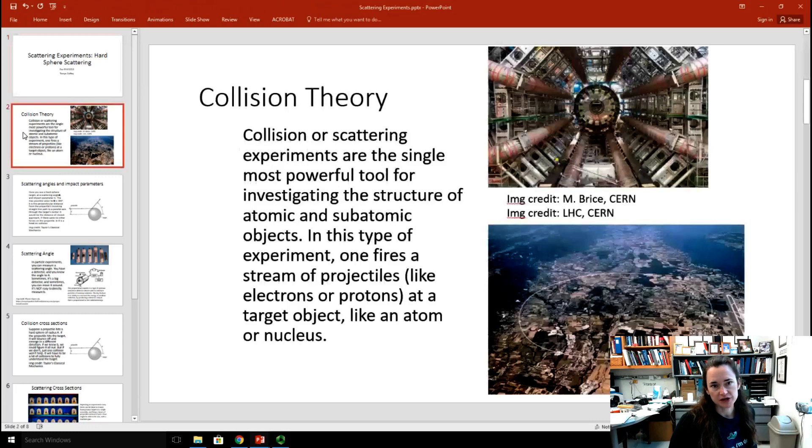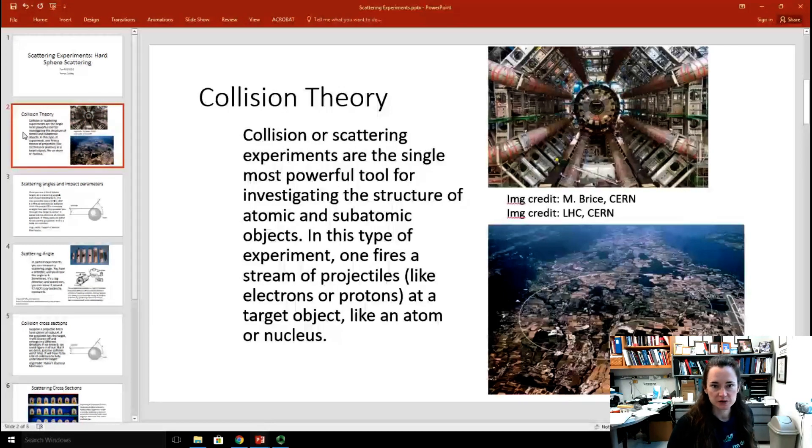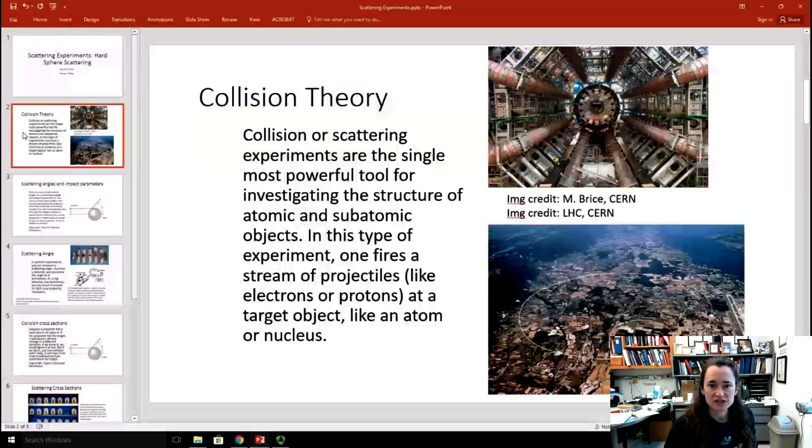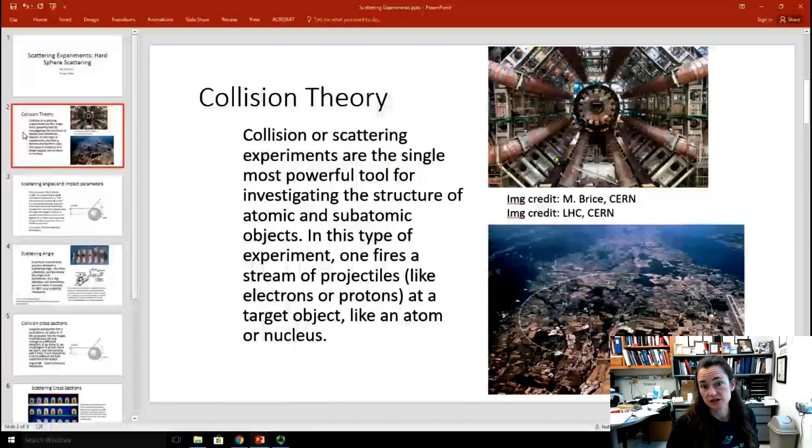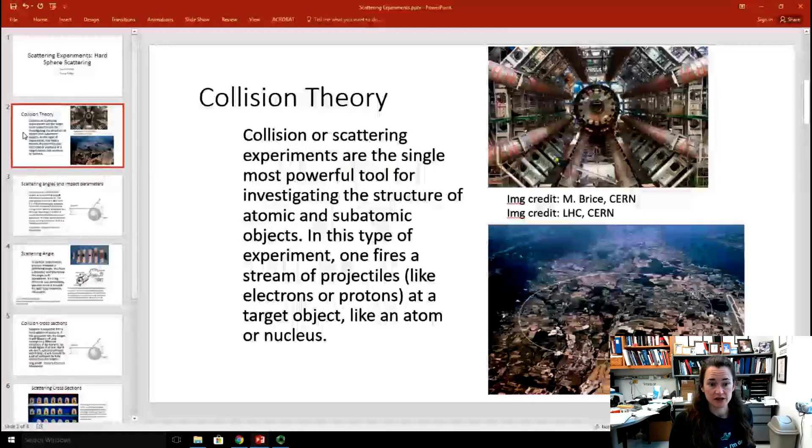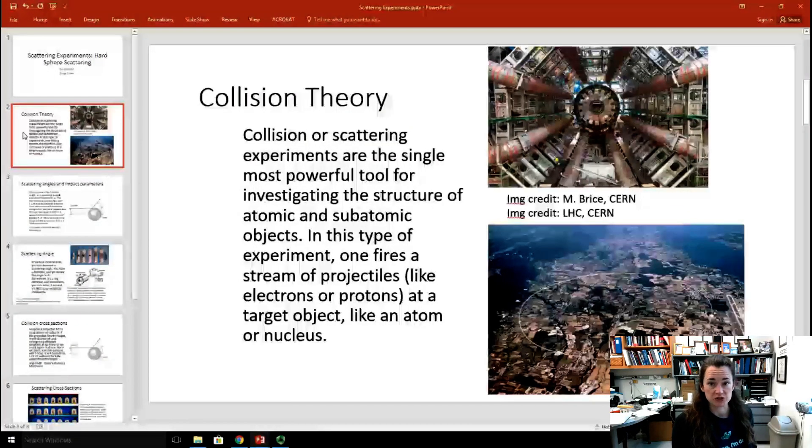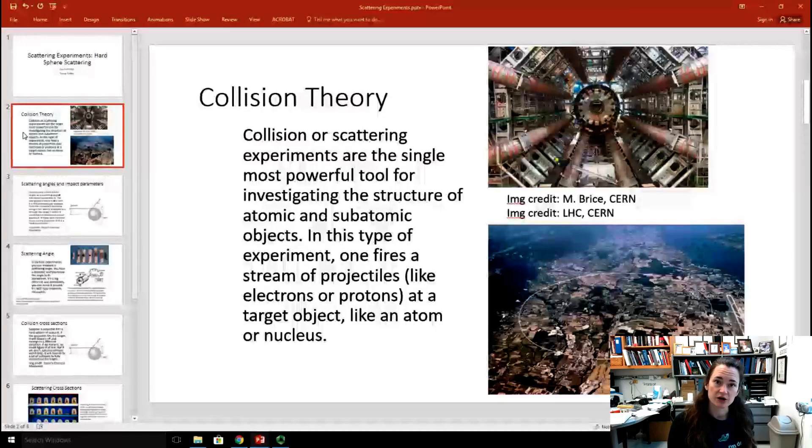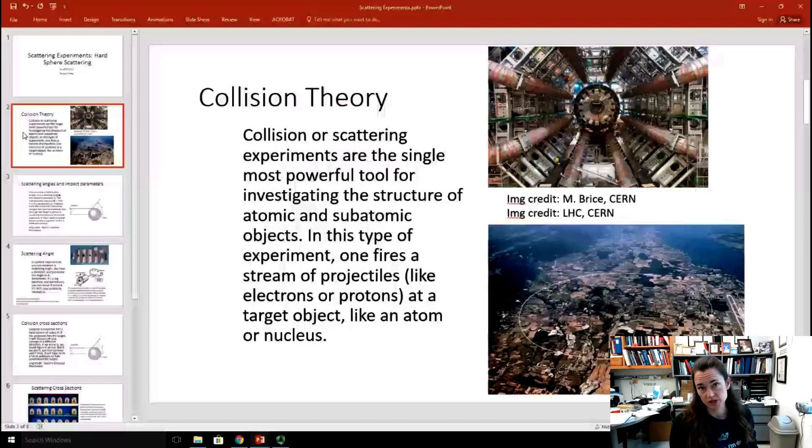Collision theory: in collision or scattering experiments, they're actually the single most powerful tool that we have for investigating the structure of atomic and subatomic objects. In this type of experiment, you fire a stream of projectiles, like electrons or protons, at target objects, like atoms or nuclei. This is what's going on at CERN and at other supercolliders where they're studying the structure of subatomic particles.